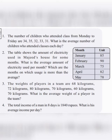Which are the months on which usage is more than the average? We have to take a table with month and unit columns. In January it is 85, February 90, March 75, April 82, May 78.